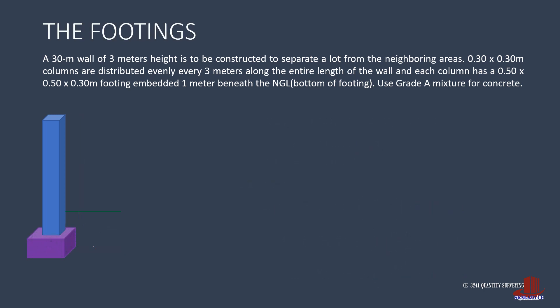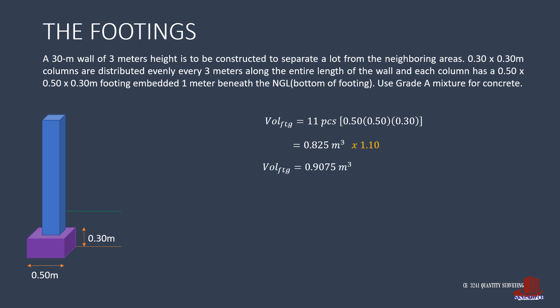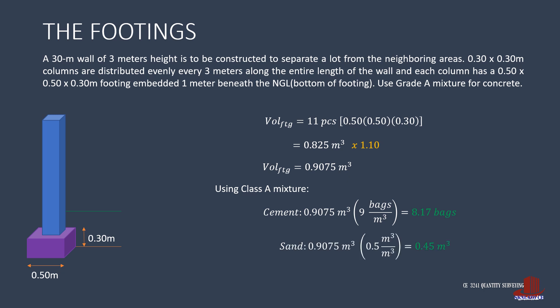Next is estimating the footing for each column. The total volume for the footings is 11 pieces multiplied by the size 0.5 by 0.5 by 0.3, giving 0.825 cubic meters. This is multiplied by a wastage factor of 10% as footings are poured directly on the soil, giving a total volume of 0.9075 cubic meters. With class A mixture: cement is 0.9075 times 9 bags, requiring 8.17 bags. Sand is the volume multiplied by 0.5, resulting in 0.45 cubic meters. Gravel is the volume times 1, requiring 0.91 cubic meters.